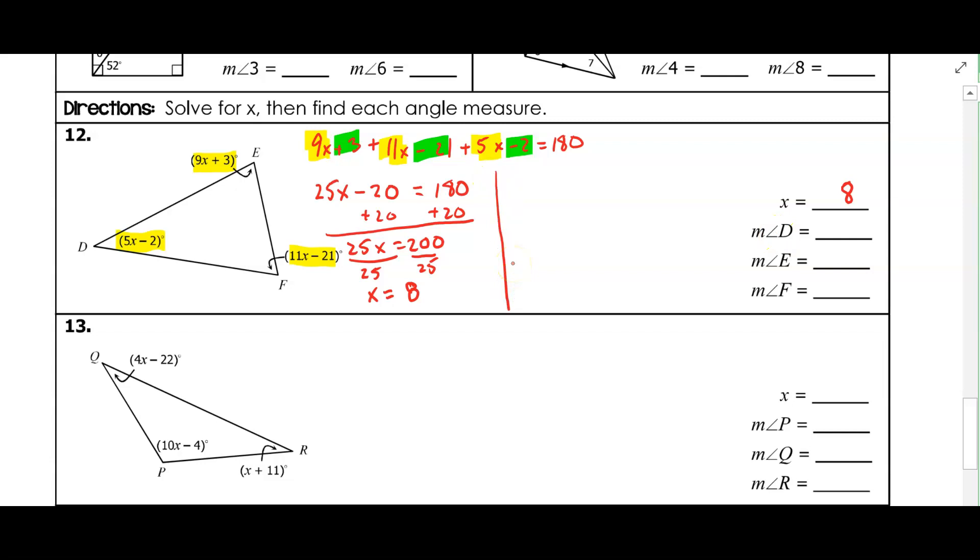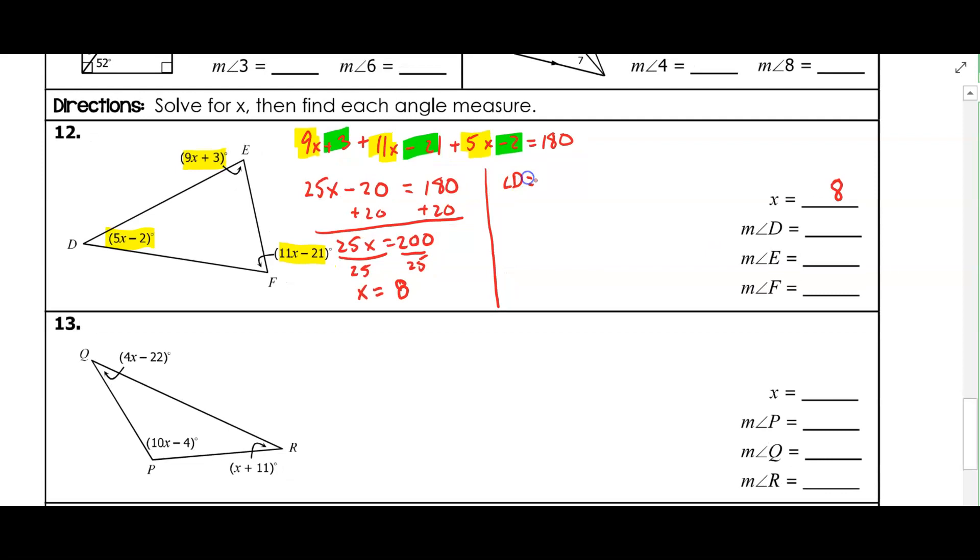So let's start with D. So angle D is going to be 5 times 8, because that's what we found for x minus 2. So that's 38, so 38 degrees.